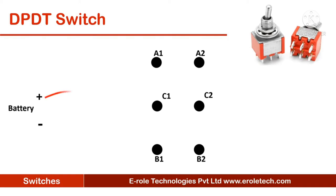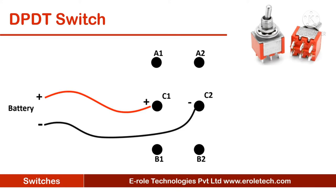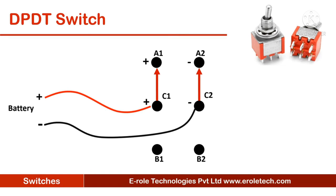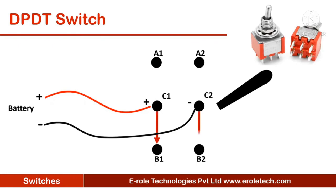If we take a battery and connect the positive and negative terminals to its middle pins, then both the middle pins will get positive and negative polarity. Now, if we push its lever downward, then its common pins will connect internally to A1 and A2, and those pins will get positive and negative polarity. When we push the lever upwards, the middle pins will connect to B1 and B2, and these two pins will get positive and negative polarity.